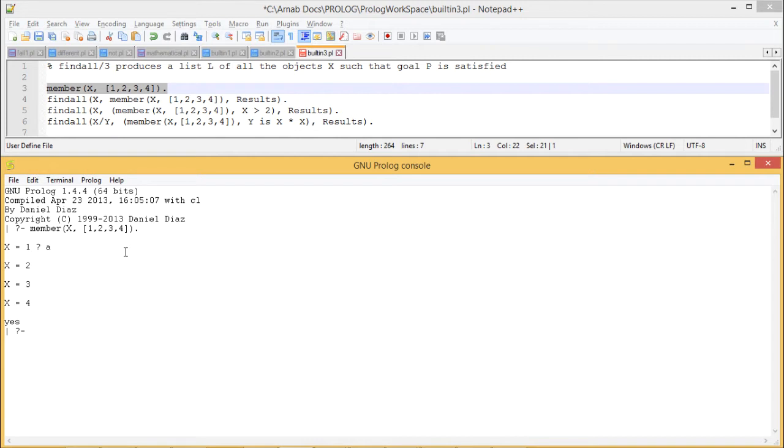In this way I'm getting multiple values for X. But I want to clump them. I want to put them in a list. All the solutions I want to put them in a list. If I want to do that one, that can be done using the built-in predicate findall.